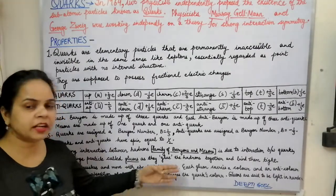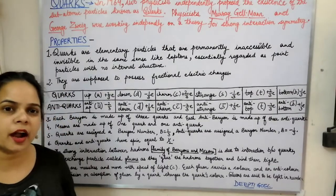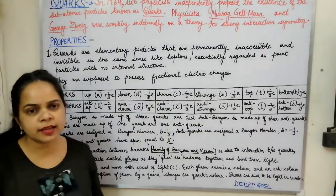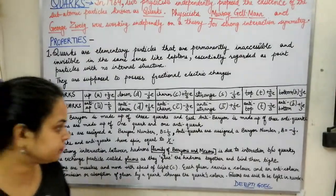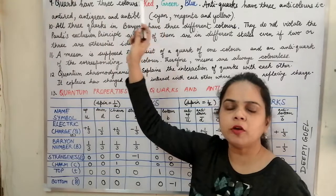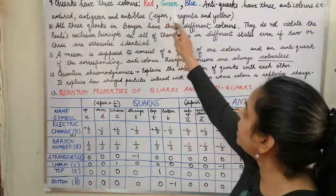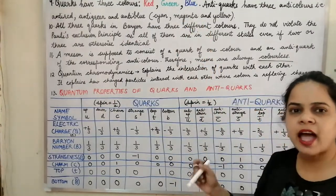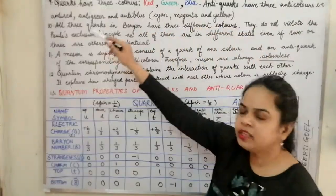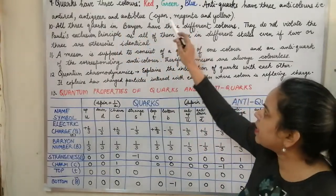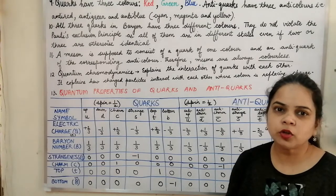The gluons facilitate the quarks' color. The quarks are basically in three primary colors — red, green, and blue — and the anti-quarks are present in the anti-colors: anti-red which is cyan, anti-green which is magenta, and anti-blue which is yellow. So the quarks possess the characteristics of colors.